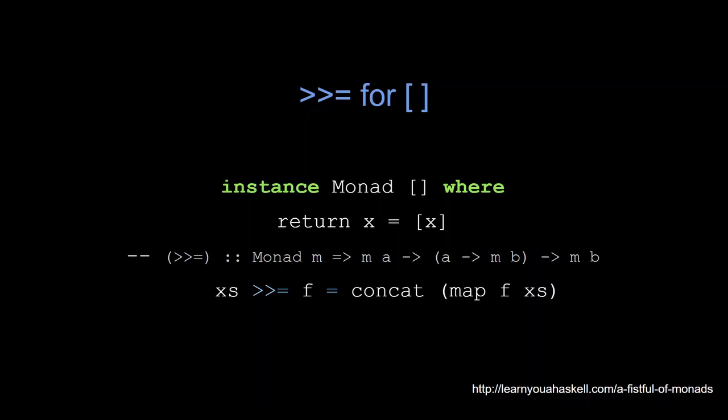The misleadingly named return operator is another operation supported by the monadic interface which just wraps up a plain value into the monadic context. In case of lists it just creates a singleton list from the given element.